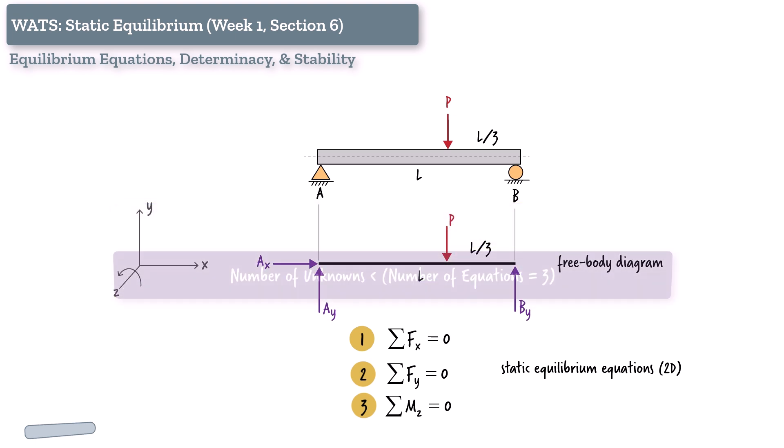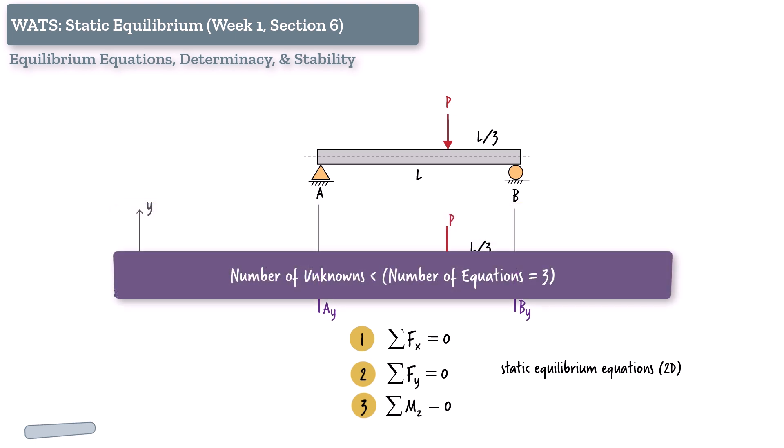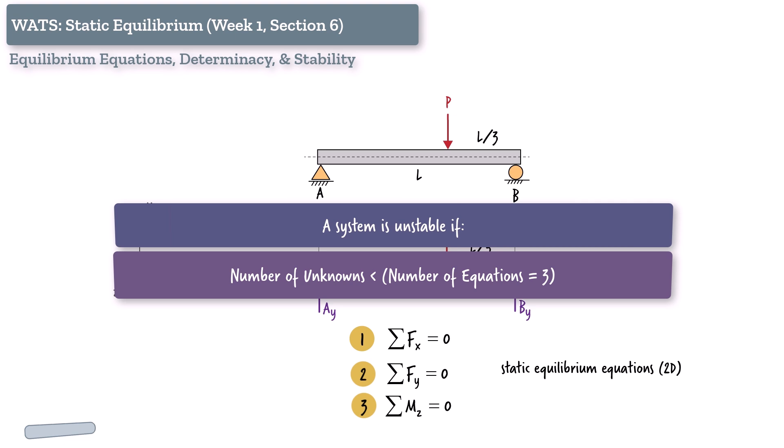On the flip side, if we have fewer than three unknowns, we can't fully constrain the structure. That means the structure is unstable. It doesn't satisfy the conditions of static equilibrium. Let's go through a few examples to see how this works.